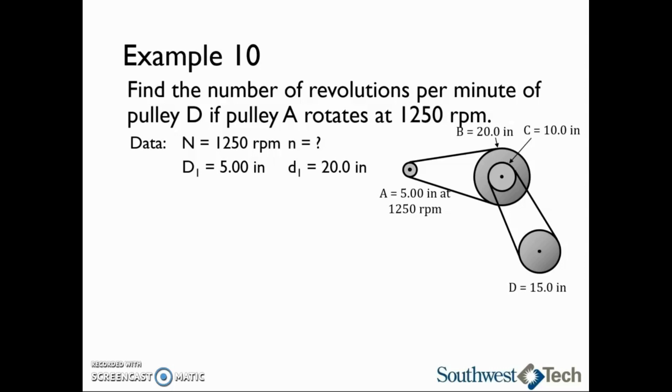Looking at the next belt, pulley C, which we will call capital D2, has a diameter of 10.0 inches. Pulley C drives pulley D, which we will call lowercase d2, and it has a diameter of 15.0 inches. Now that we have all of the driver and driven pulleys identified, we can write down the basic equation.